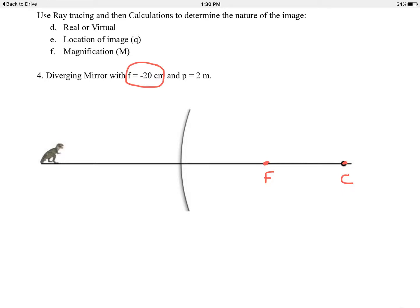Once again, as you do ray tracing to locate the image, I always start with the top of the object. In the case of the candle, that was the flame at the top. I'm just going to use the top of the T-Rex's head, which is where his teeny tiny brain is. I have a ray of light that reflects off that T-Rex's head, comes in parallel to the principal axis.